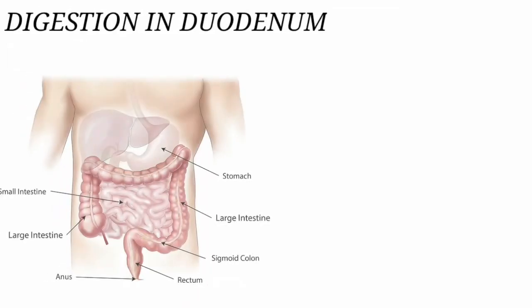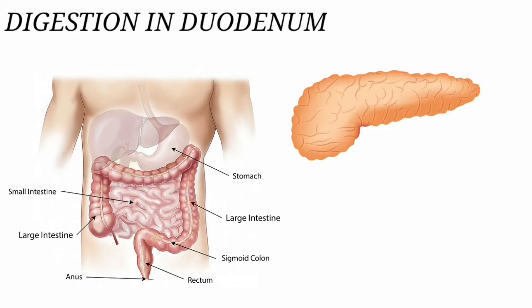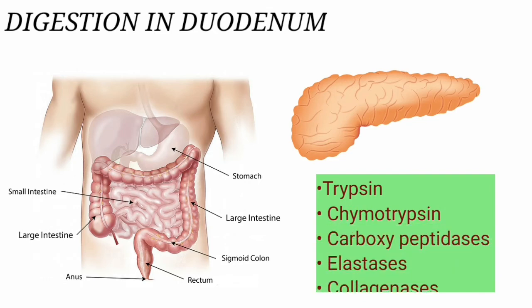Digestion in the duodenum. The food bolus after leaving the stomach reaches the duodenum, where it meets with pancreatic juice. A number of proteolytic enzymes are present in the pancreatic juice to act on the proteins and partly digested products. The chief enzymes present in the pancreatic juice are trypsin, chymotrypsin, carboxypeptidase, elastase, and collagenases.